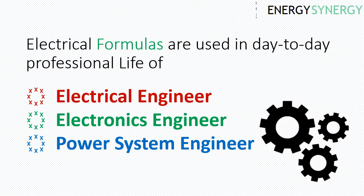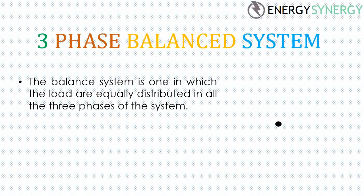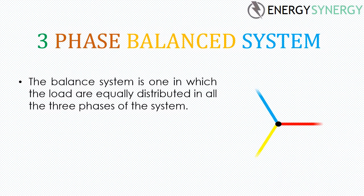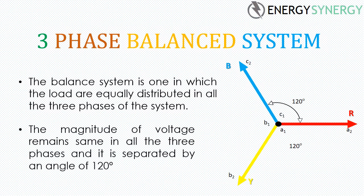Let's learn some basic and useful electrical formulas which are also important in view of interviews. Firstly, let's learn about power systems. A power system is divided into two systems: balanced and unbalanced. The balanced system is one in which the loads are equally distributed in all three phases. Let's understand this using a phasor diagram — these are the three phases represented by R, Y, and B phases. The magnitude of voltage remains the same in all three phases.